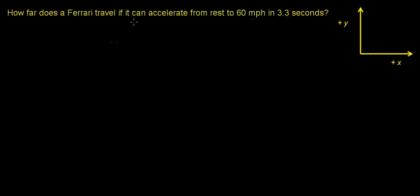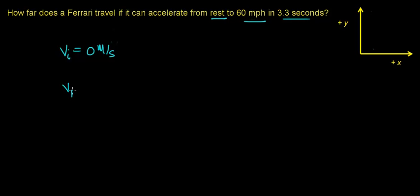In this video, we're going to find the distance a Ferrari travels as it accelerates from rest to 60 miles per hour in a time interval of 3.3 seconds. The best place to begin is to summarize the information. The initial velocity of the Ferrari is 0 meters per second — the car begins from rest — and it reaches a final velocity of 60 miles per hour over a time interval of 3.3 seconds.